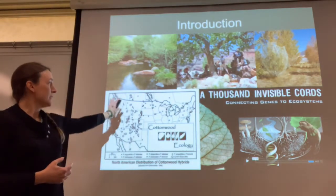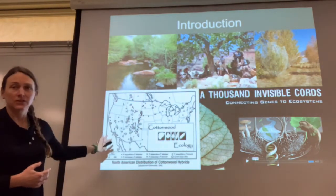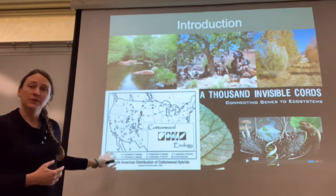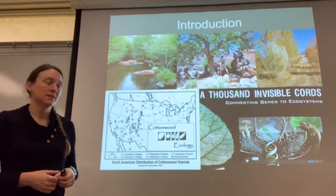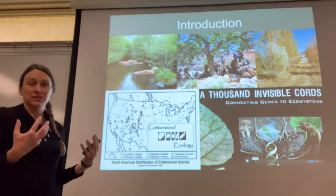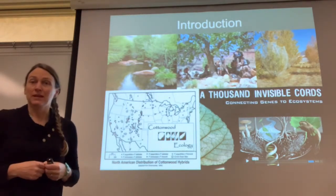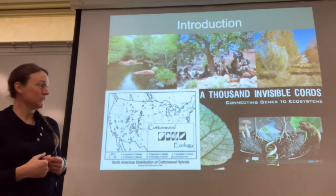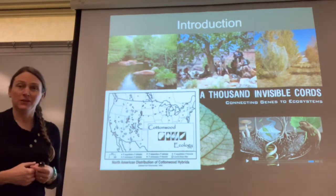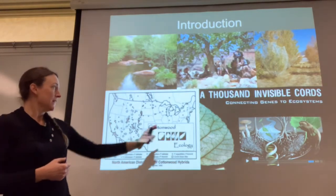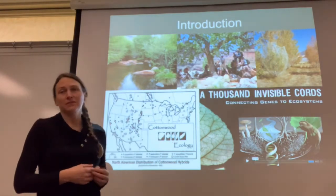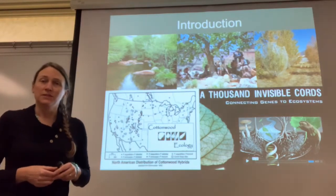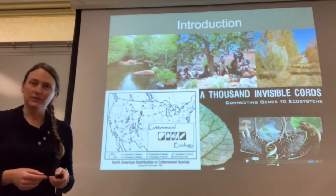All of these locations that you can see on the map here are hybrid zones, so cottonwood hybridizes, and hybridization is a really key piece of genetic variation. There's even a really cool documentary called A Thousand Invisible Chords that maybe we can find time to watch at some point in this program.